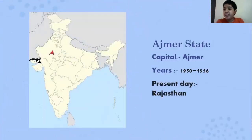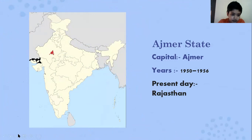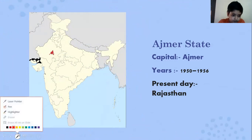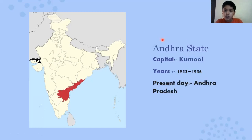Our first state is Ajmer State. The capital was Ajmer and it existed from 1950 to 1956. In present day, it is in Rajasthan — you can see it here on the map.